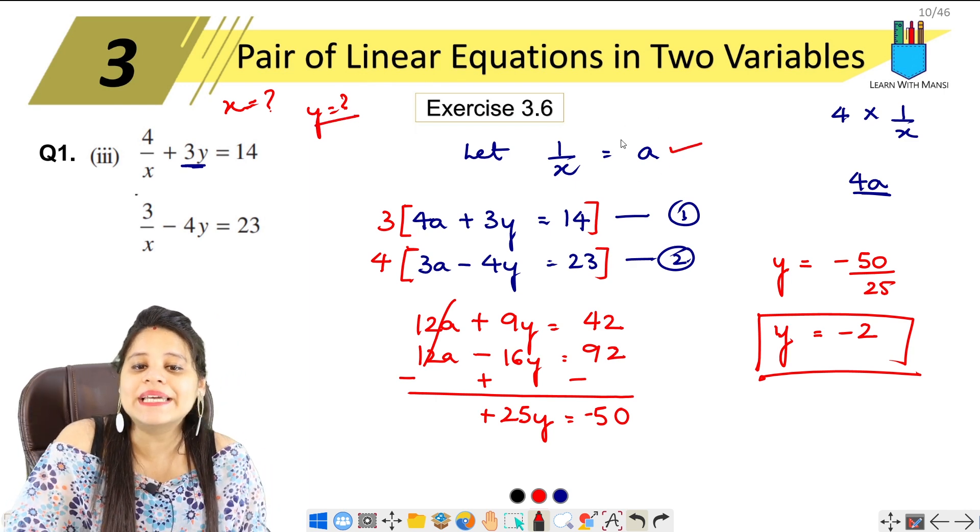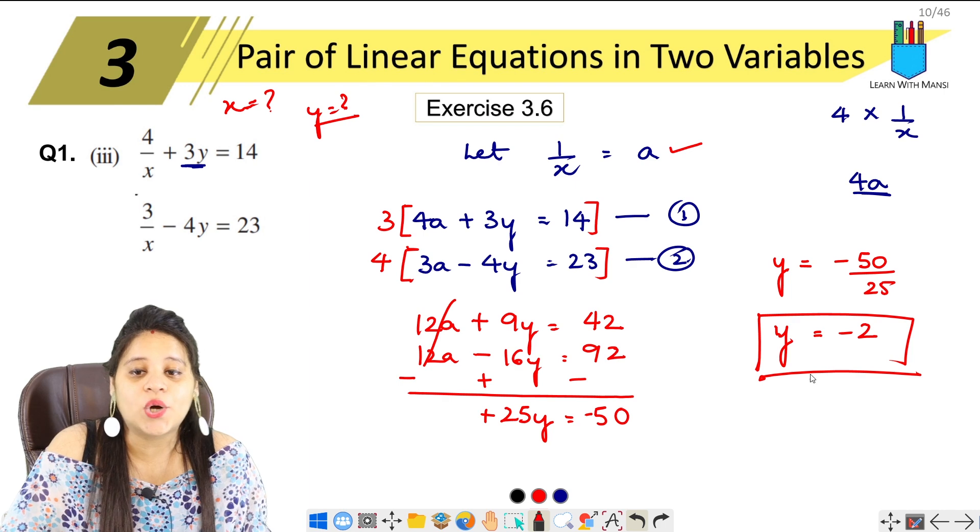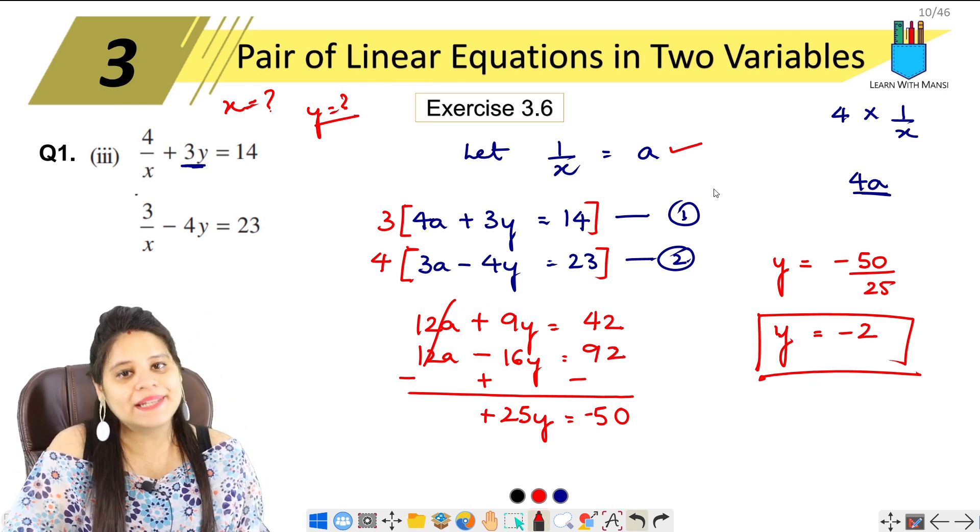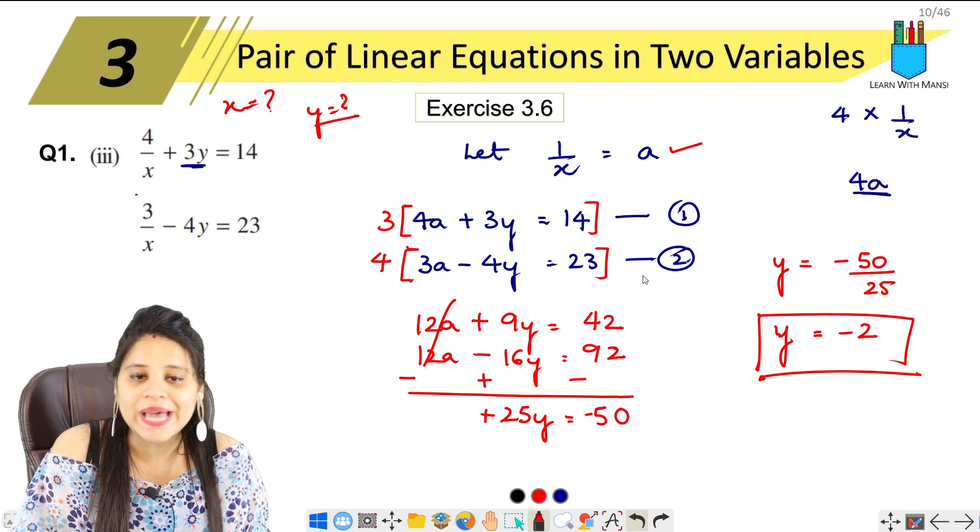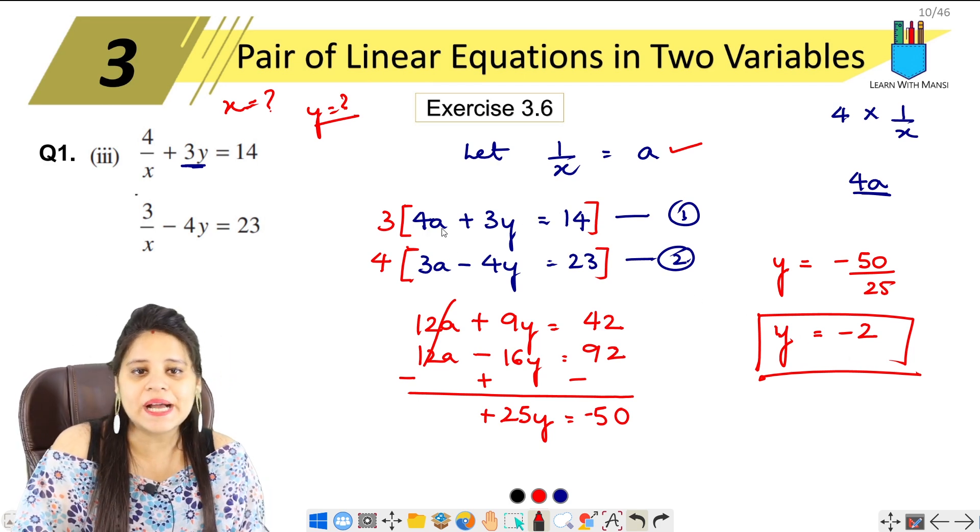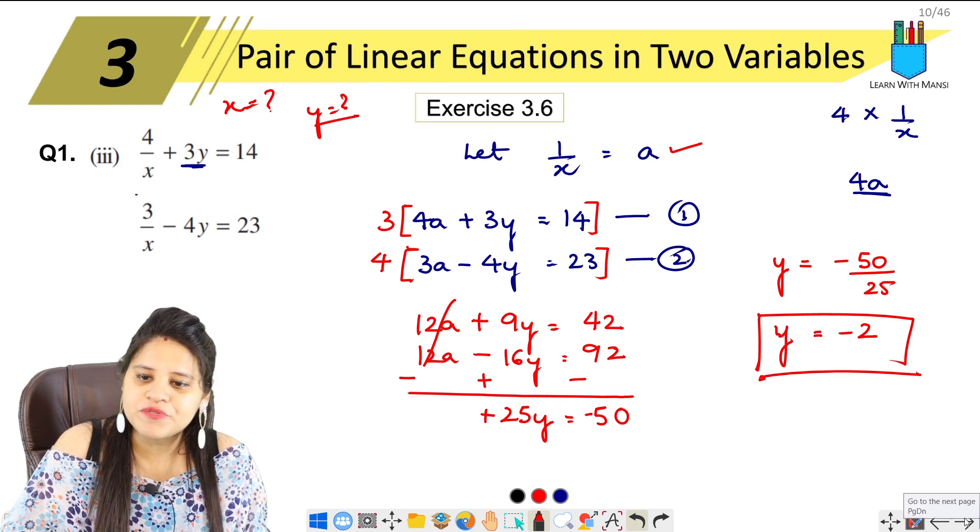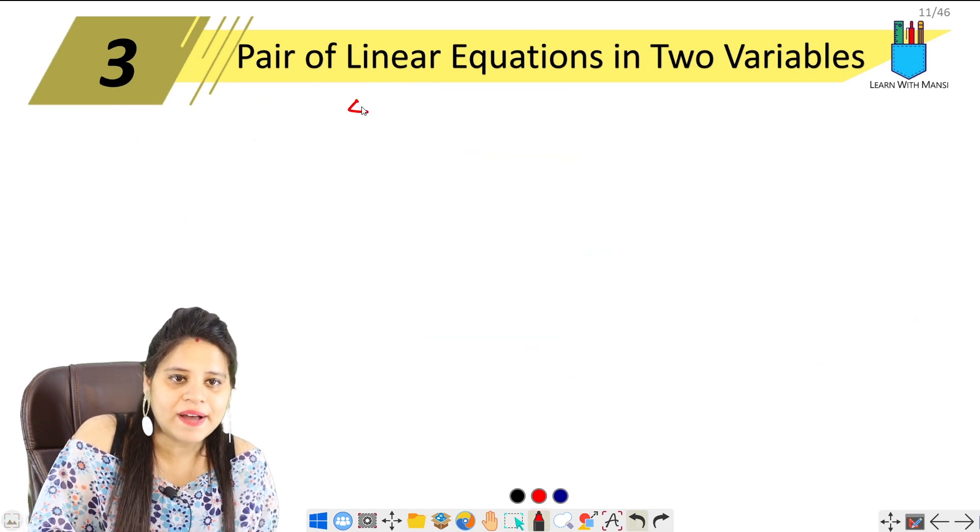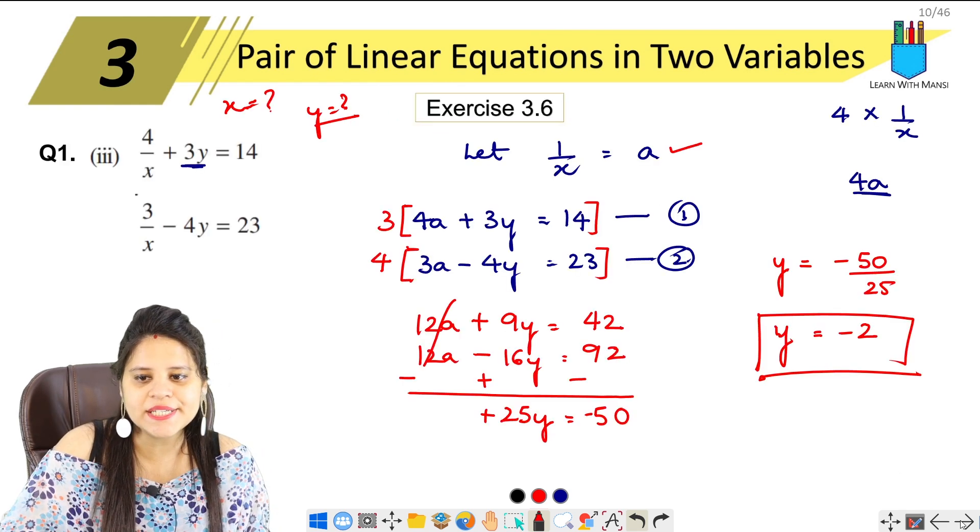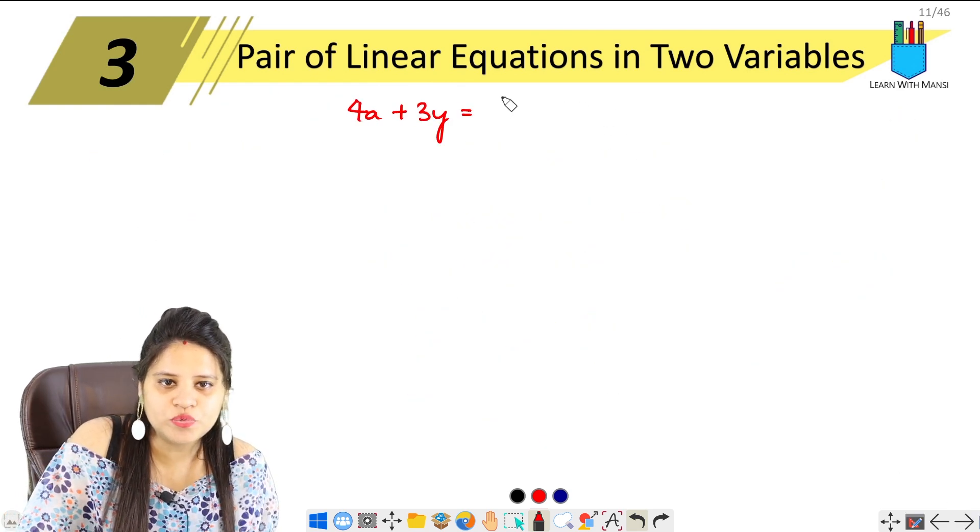Now y ki value has come. To find x ki value, first from y's value we find a, and then find x. So see, y equals to minus 2. From any of these equations, put it, a will come. You have two equations. First, 4a plus 3y equals to 14 probably. Yes, equals to 14.